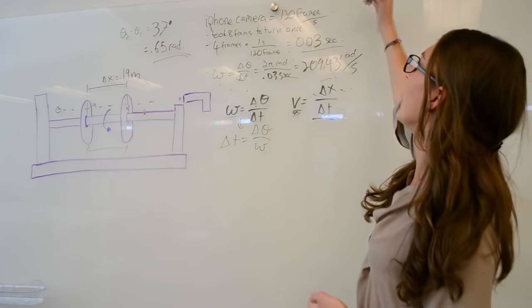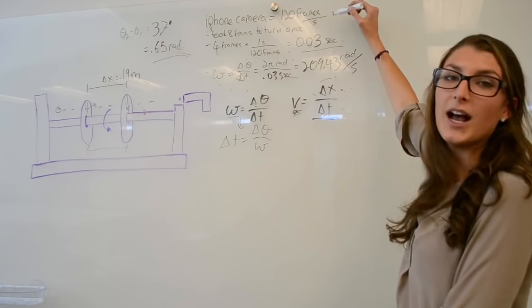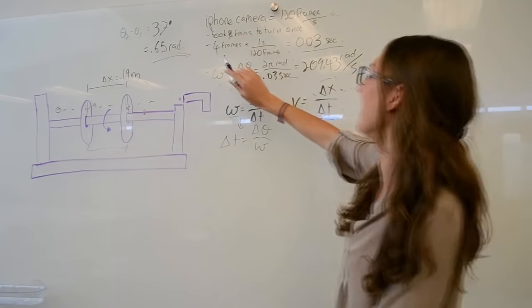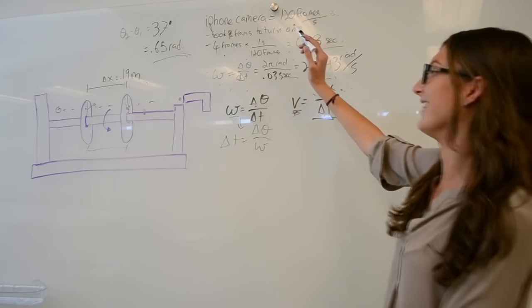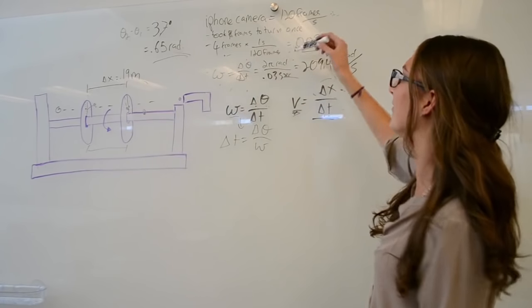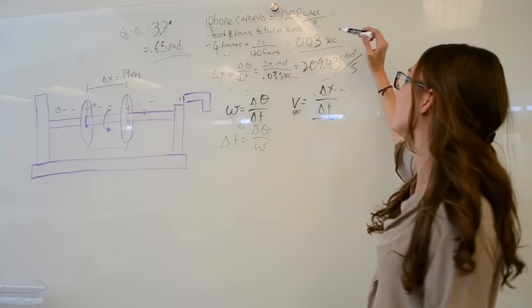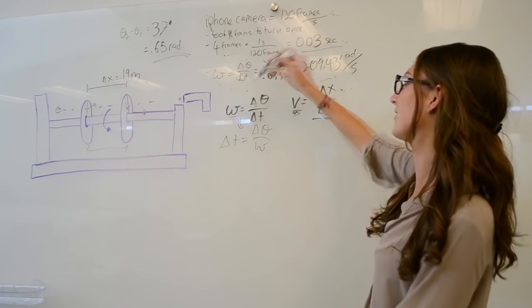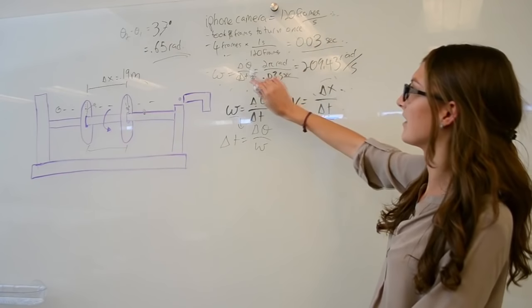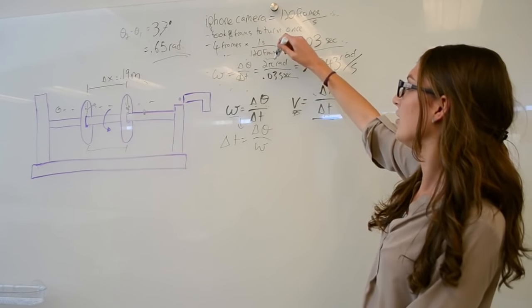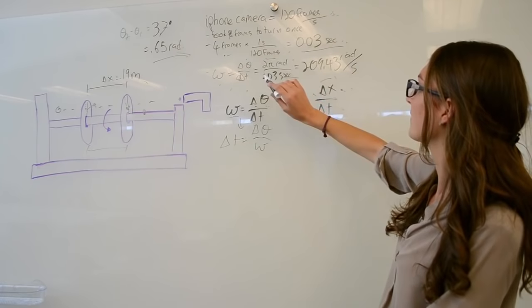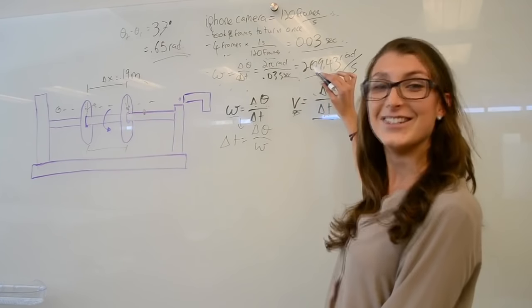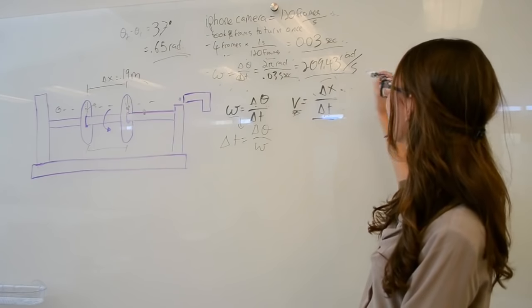We found omega by knowing that the iPhone camera has 120 frames per second. It took 4 frames to turn once around. So 4 frames divided by 120 frames is equal to 0.03 seconds. Omega is equal to delta theta over delta t. Since delta theta is turning once around, delta theta is 2 pi radians divided by 0.03. So we know that omega is 209.43 radians per second.